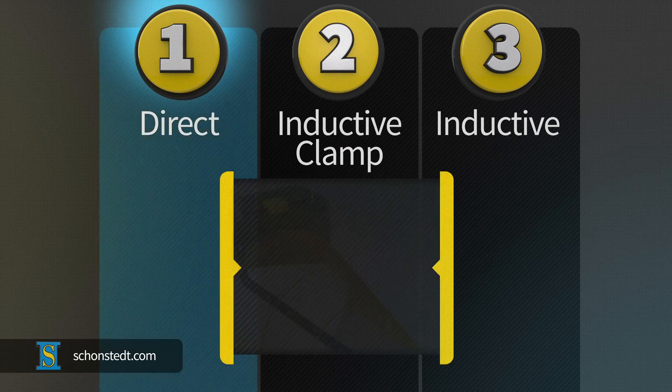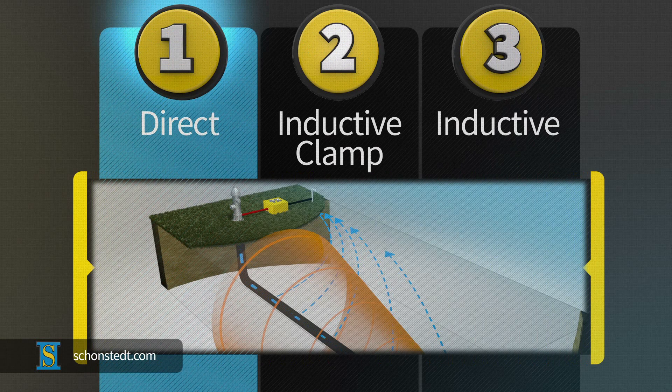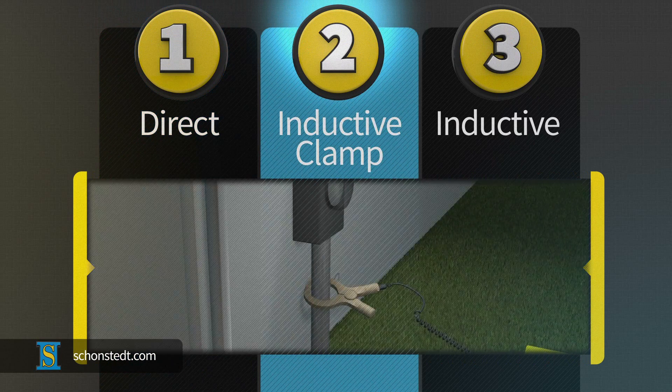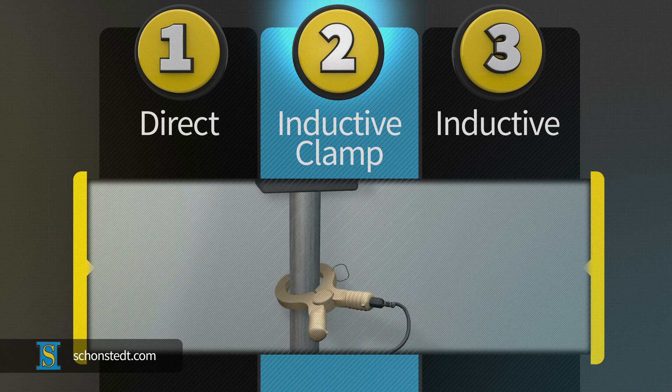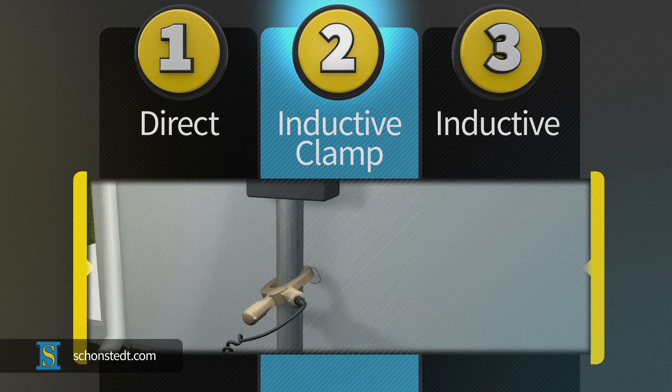The direct mode produces the largest amount of current and increases locating success. The inductive clamp mode produces less current, but it's a good choice when lack of access to the pipe or cable prevents you from using the direct mode.